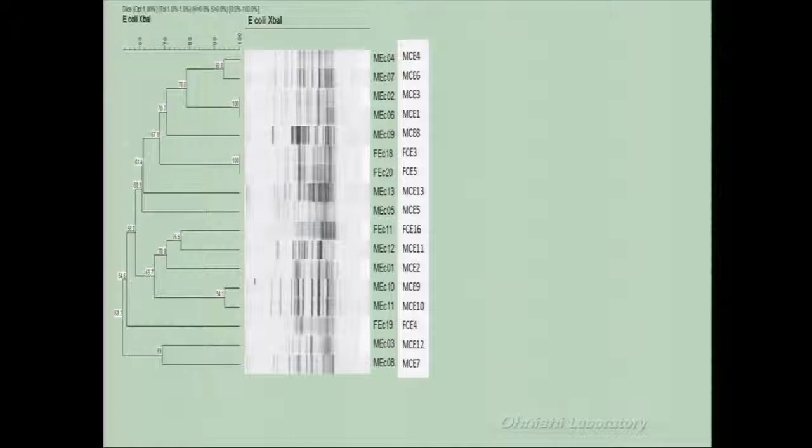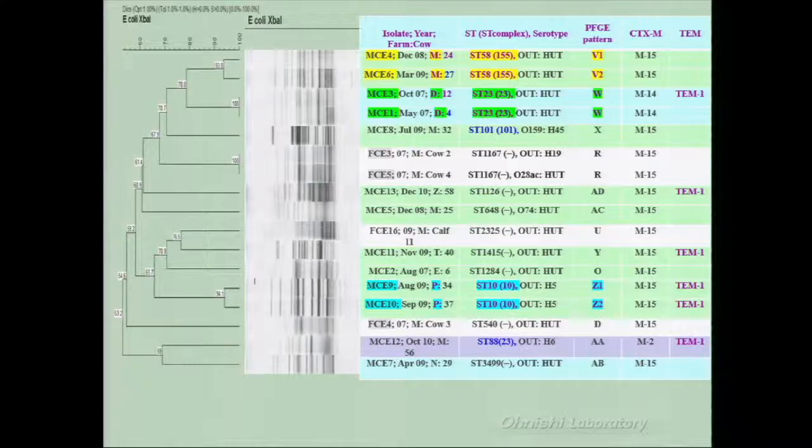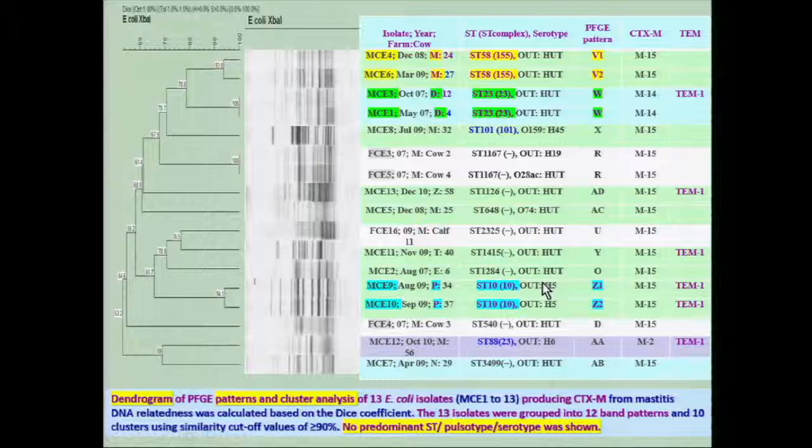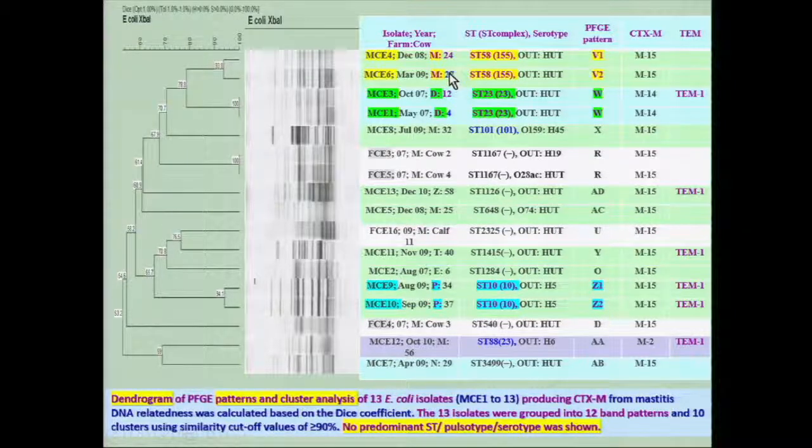This is a dendrogram and cluster analysis of PFGE for E. coli. No predominant ST, pulsotype, and serotype was shown. However, 2 isolates each from 2 different cows on the same farm had the same ST and closely related pulsotype.